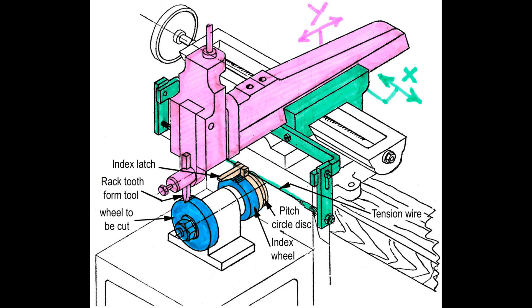A cocked wheel and index latch are used as indexing devices for machining all the gear teeth.